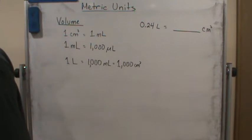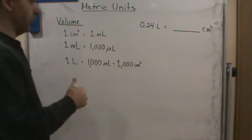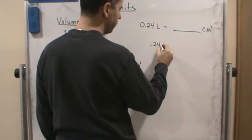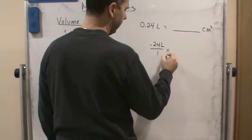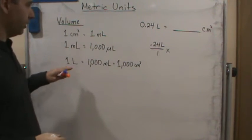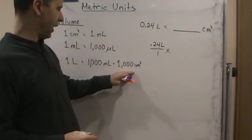So we can use one or more of these conversion factors. We can write it as a unit ratio. So let's start. It's 0.24 liters over 1. And then what unit ratio would you like to use? We could use the fact that one liter is equal to a thousand centimeters.